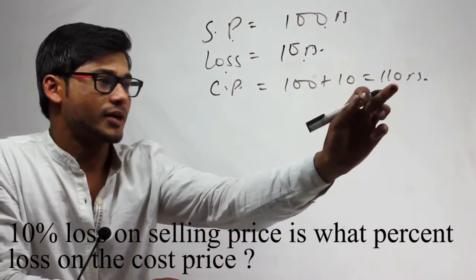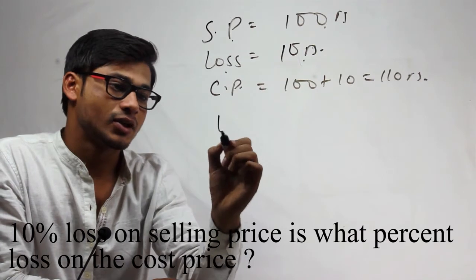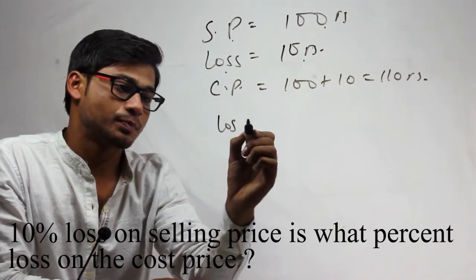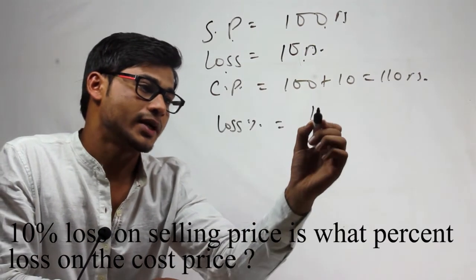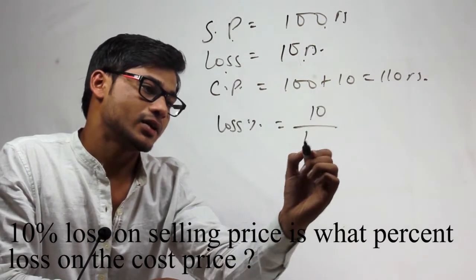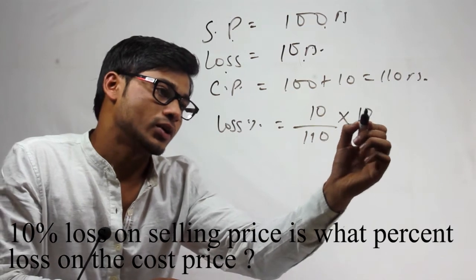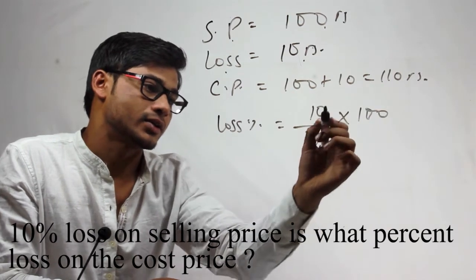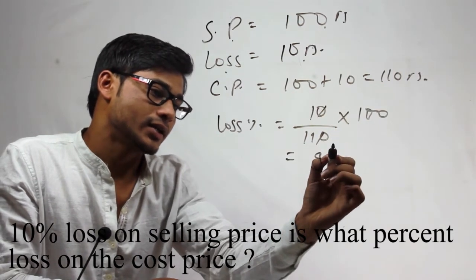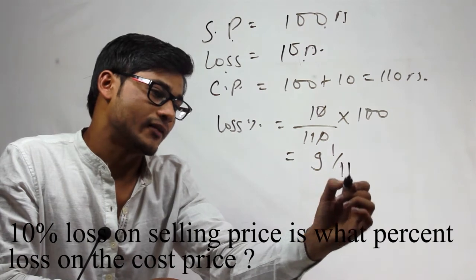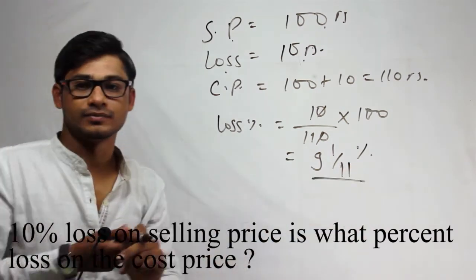The cost price is 110 and loss is 10 rupees. So loss percent on cost price will be 10 by 110 into 100, which gives 9 and 1 by 11 percent. That's it.